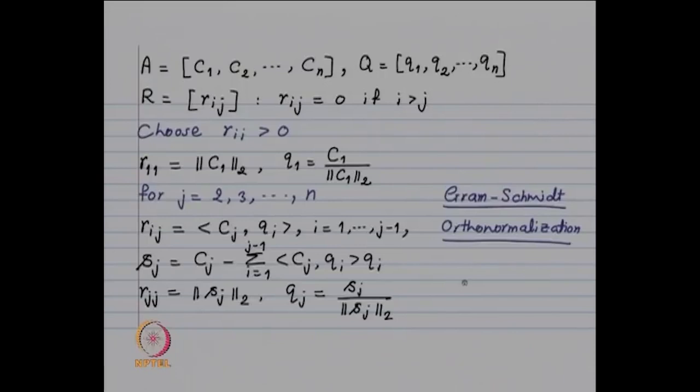This is nothing but the Gram-Schmidt orthonormalization process. If we have n linearly independent vectors, then we can construct a set of n orthonormal vectors with the property that the span of C1, ..., Cj equals the span of Q1, ..., Qj. Thus, QR decomposition of A is nothing but Gram-Schmidt orthonormalization applied to the columns of A. The orthonormal vectors obtained form our orthogonal matrix Q, and the coefficients rij form our upper triangular matrix R.